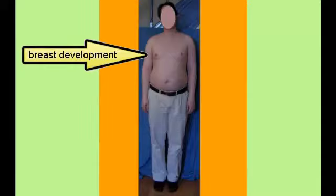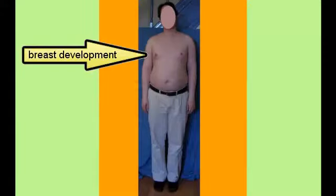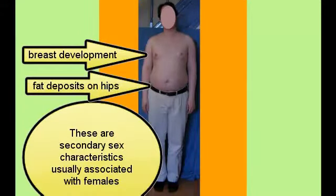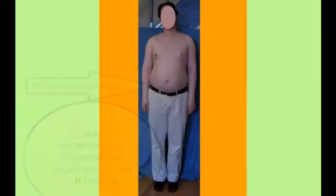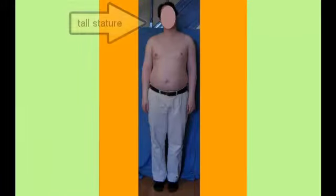Here is a man with Klinefelter syndrome — actually a teenage boy. You'll notice a little bit of breast development and extra fat around the hips that you wouldn't normally see in a teenage boy. The sheet behind him is at about 6 feet, and you can see a good 7 or 8 inches of him sticking up above that. So he's about 6'7" or 6'8" — extremely tall.